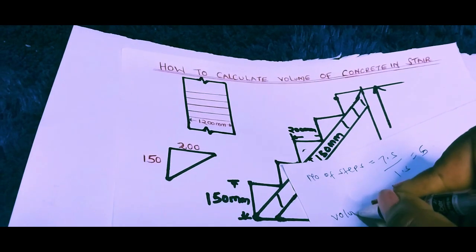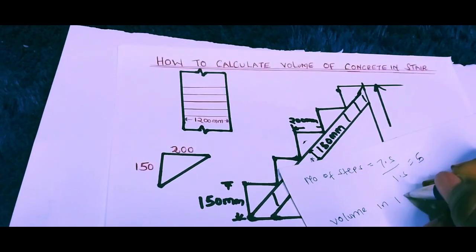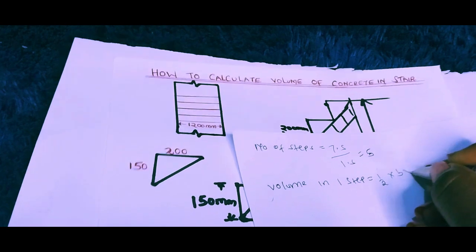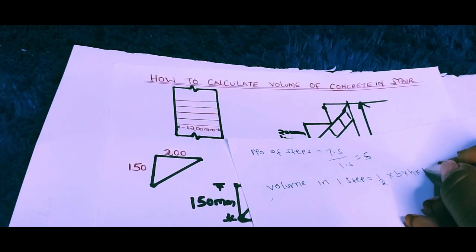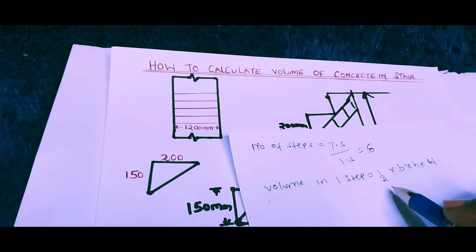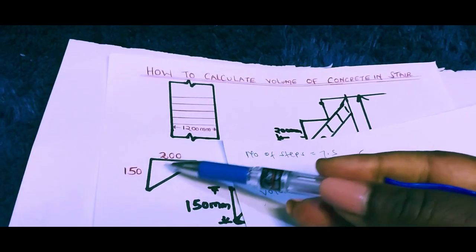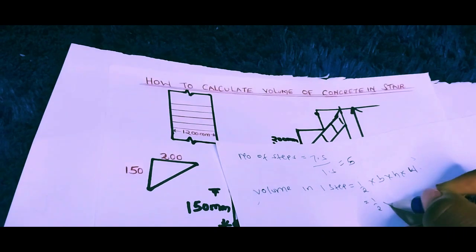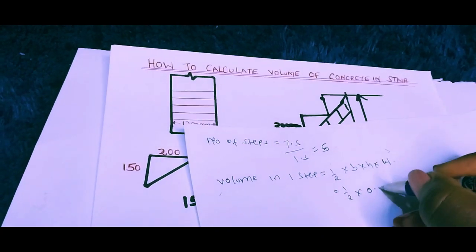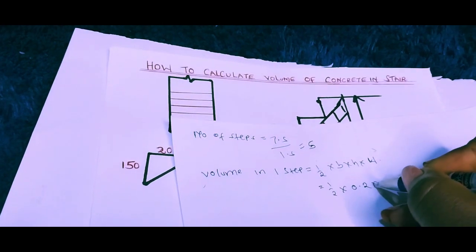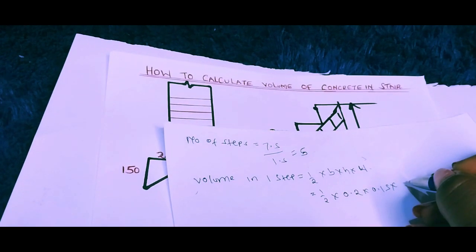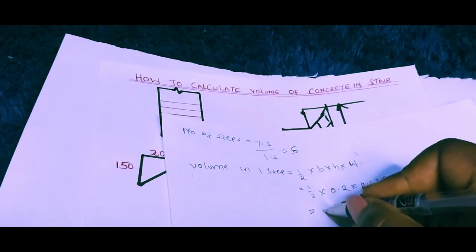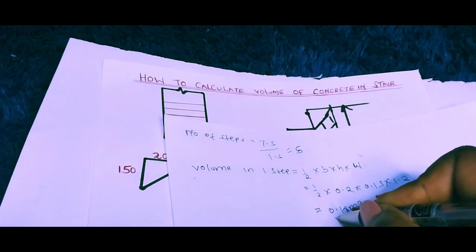The volume in one step is: half times the base times the height times the width of the stair. That is ½ × 0.2 m (base/tread) × 0.15 m (riser height) × 1.2 m (width). Tabulating that gives us 0.018 cubic meters per step.